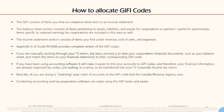How to allocate GIFI codes: GIFI consists of items you find on a balance sheet and on an income statement. The balance sheet section consists of items pertaining to assets, liabilities, and equity for corporations, or partners' capital for partnerships. Items specific to retained earnings for corporations are included in this area as well. The income statement section consists of items under revenue, cost of sales, and expenses.